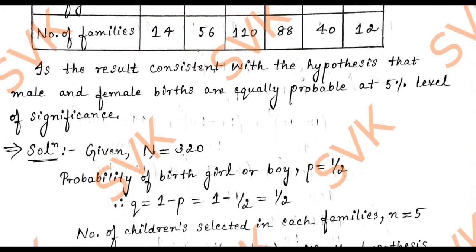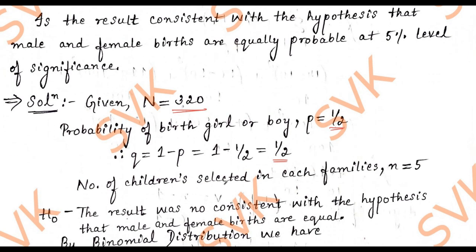Moving on to the solution part. Given: capital N, the overall value, is 320. The probability of birth of a girl or a boy, that is, the probability of success, is given by 1/2. So p equals 1/2, and q equals 1 minus p, which is also 1/2. The number of children selected in each family is given by small n equal to 5.